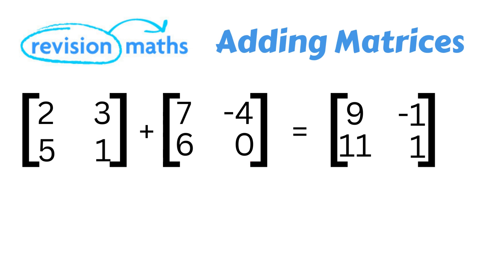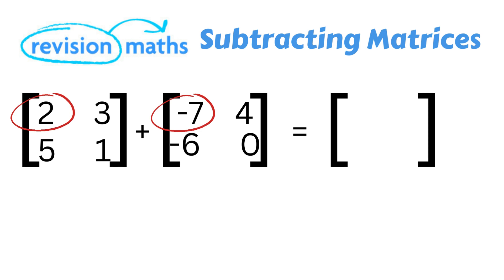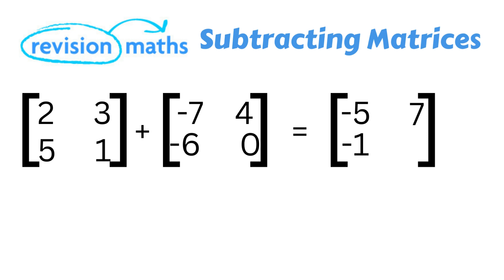With addition complete, let's move on to subtracting matrices. The principle is very similar to adding with one minor change. We need to change the subtraction into an addition and then change the numbers in the second matrix by adding a minus sign to each number. In this example the minus 4 will change to a positive 4, as a negative of a negative becomes a positive. So 2 plus minus 7 is minus 5, 5 minus 6 becomes minus 1, 3 plus 4 is 7, and 1 plus 0 is 1.